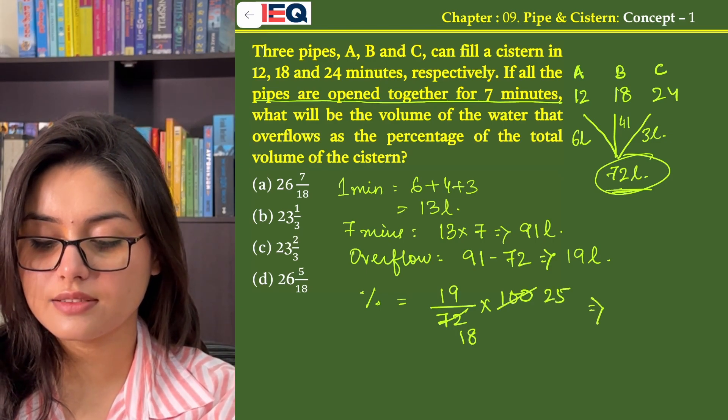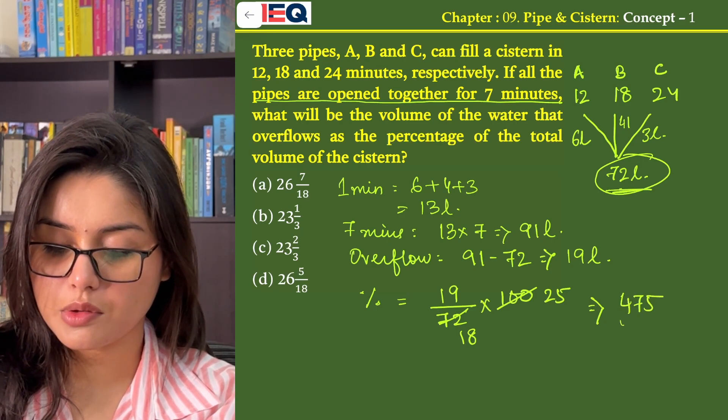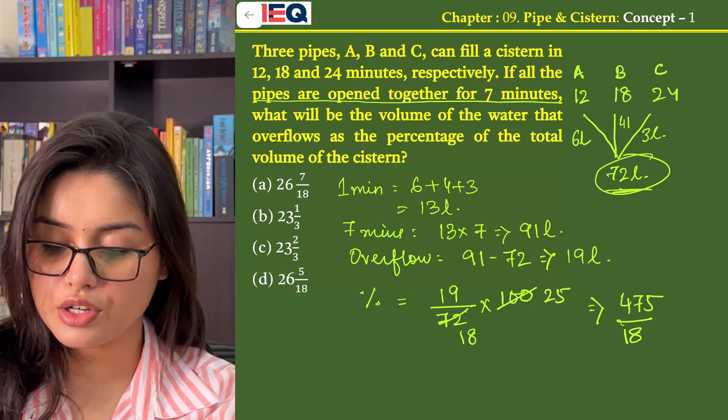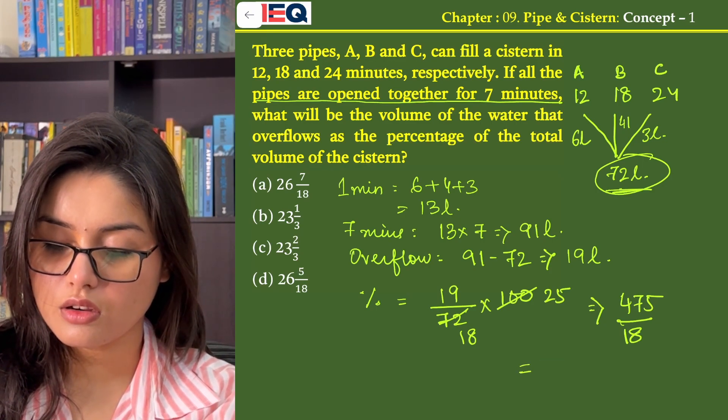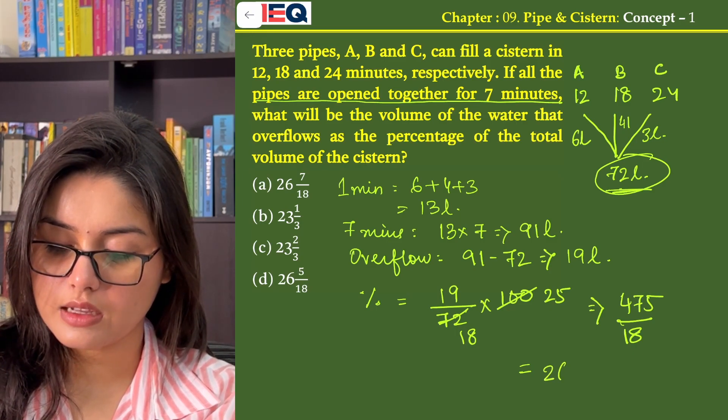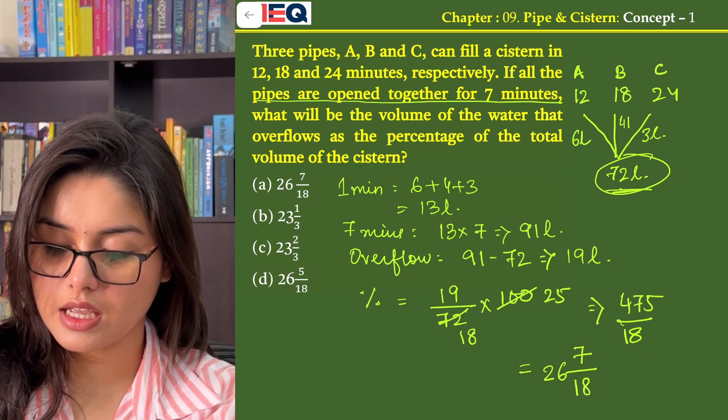19 into 25 will give us 475 by 18. On dividing 475 by 18, we get 26, 7 is left on 18.